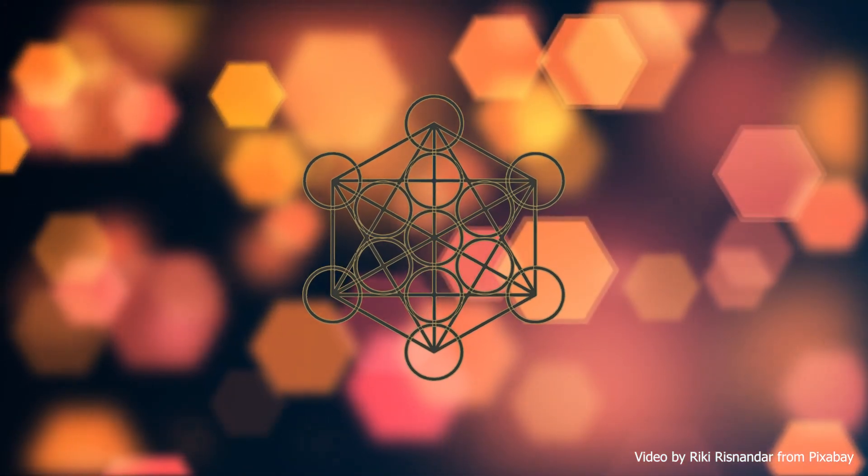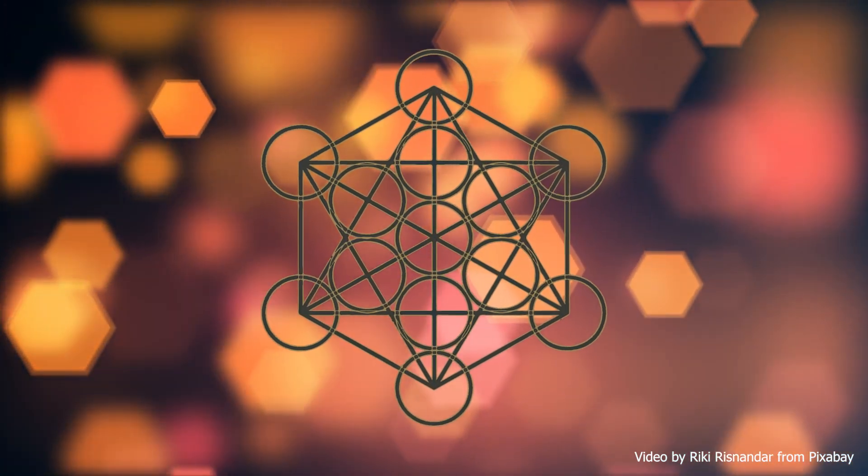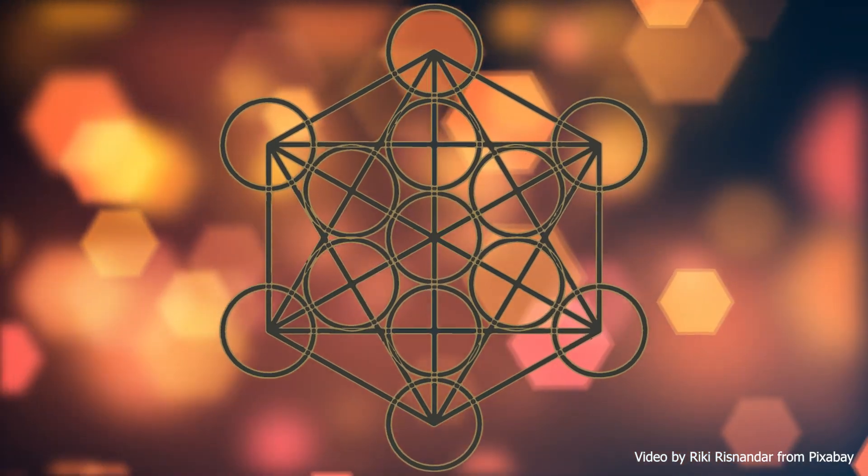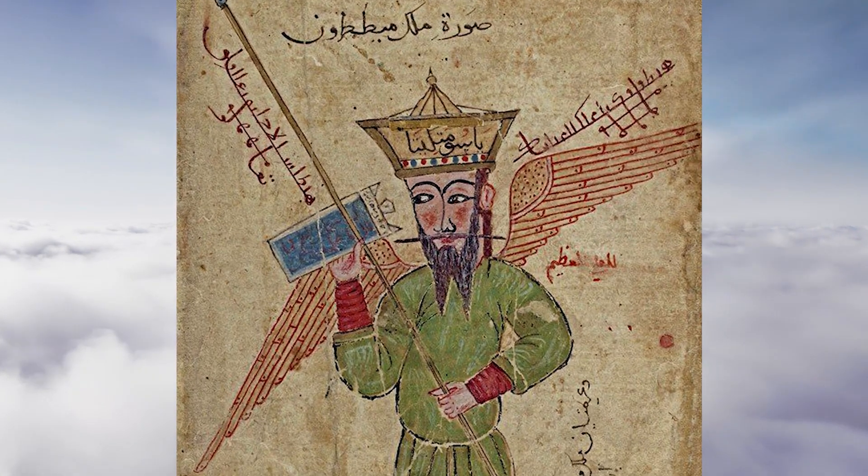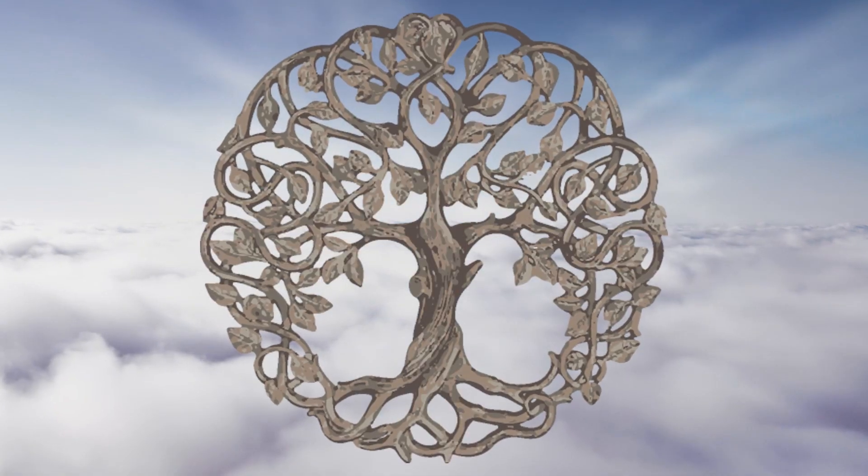Metatron's cube is a powerful symbol in sacred geometry that is believed to contain the blueprint of creation. It is named after the archangel Metatron, who is said to be the scribe of God and the keeper of the tree of life.